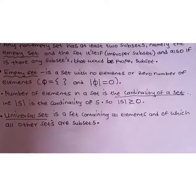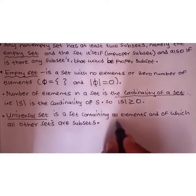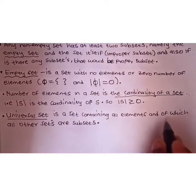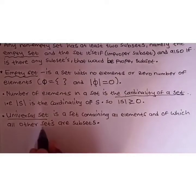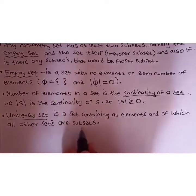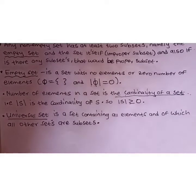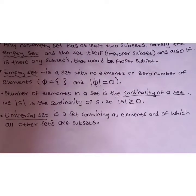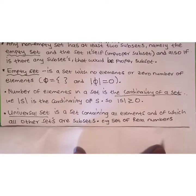We define the universal set as a set containing all elements, and of which all other sets are subsets. Elements in a set can either be letters or numbers, so we consider the set of real numbers as a perfect example of a universal set.